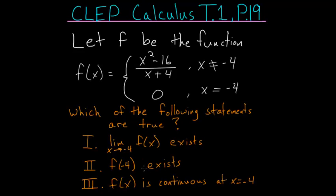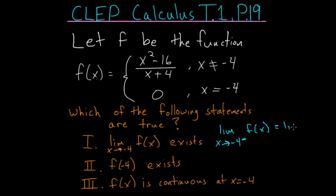Let's look at these one at a time. The first statement says that the limit as x approaches negative 4 of f(x) exists. For a limit to exist, the limit as x approaches negative 4 from the left side of the function has to equal the limit as x approaches negative 4 from the right side.